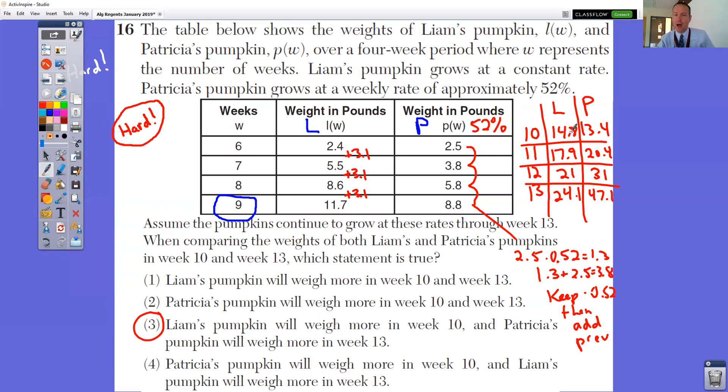It's a lot of work to figure those numbers out for Patricia. The correct answer is Liam's pumpkin will grow more in week 10, and Patricia's pumpkin will grow more in week 13. In week 10, Liam's pumpkin weighs 14, and Patricia's pumpkin weighs 13. And Patricia's pumpkin will weigh more in week 13. So then we look at week 13. Notice that Patricia's is now 47, where Liam's is only 24. It's a lot of work to get those numbers, especially for Patricia. But you have to keep on adding that 52% each week.